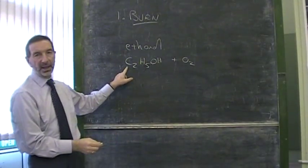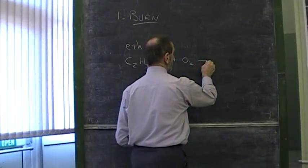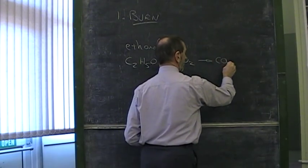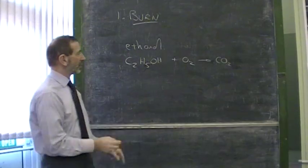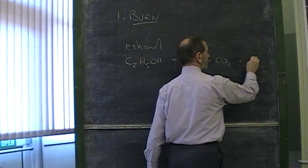When a compound containing carbon burns, we'll assume it produces carbon dioxide. The carbon joins with oxygen. When the hydrogen burns, it will produce water.